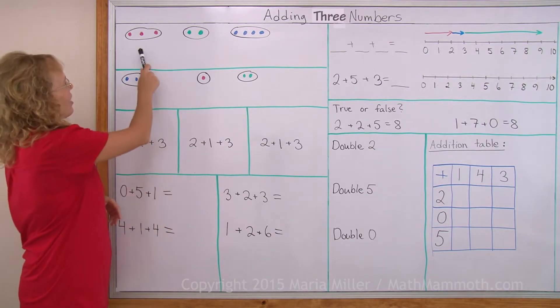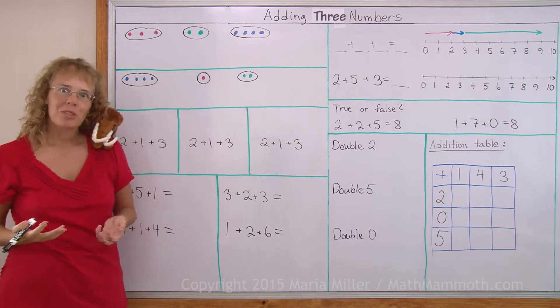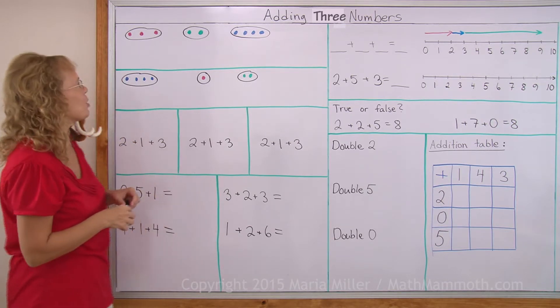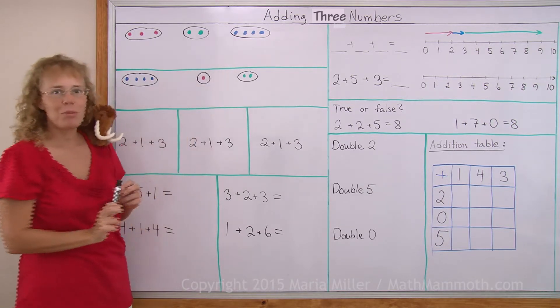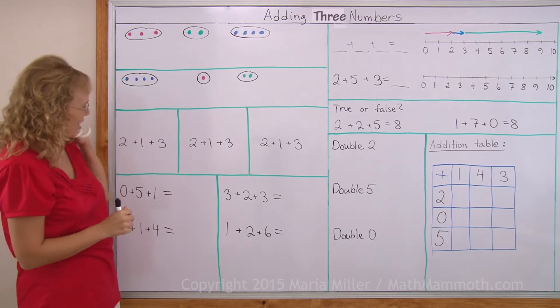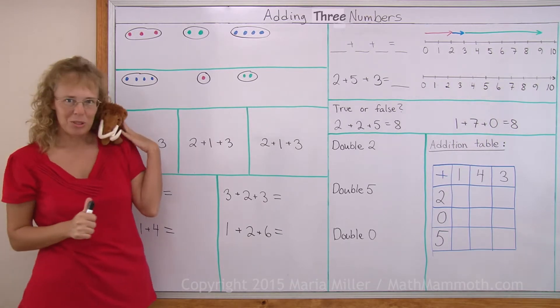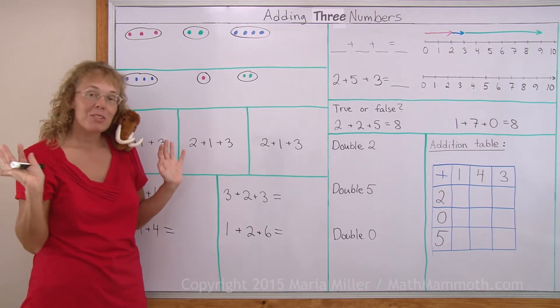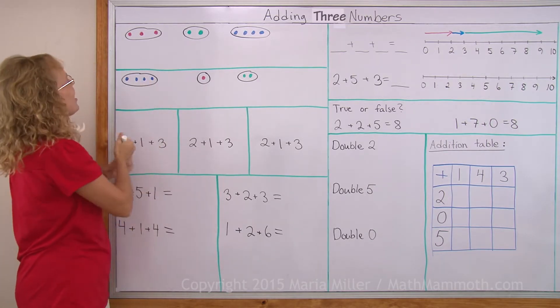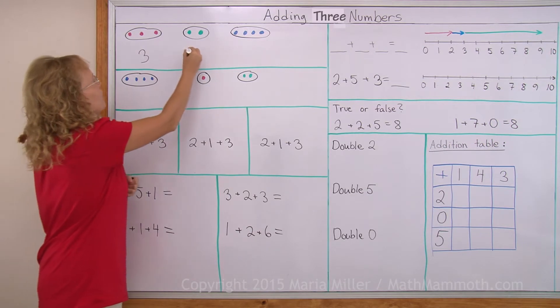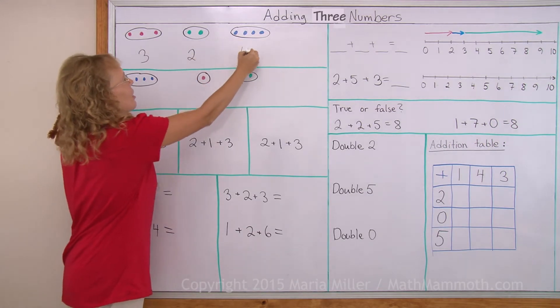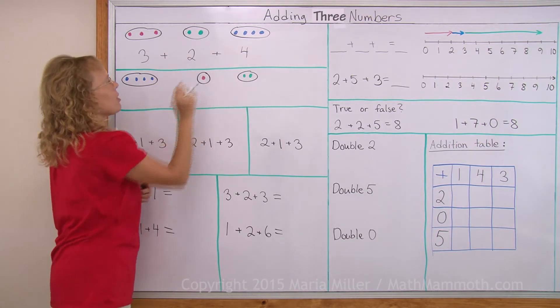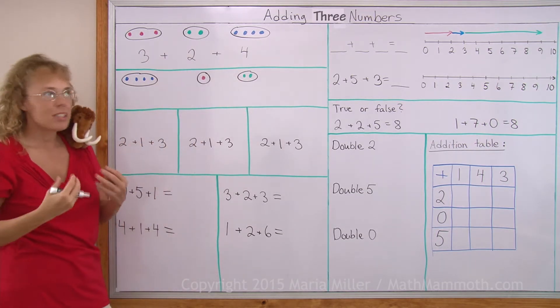Now here I have three different groups of marbles. Oh, he thinks these remind him of blueberries. Of course Matthew, everything reminds you of blueberries because you love blueberries. But whether you think of them as different kinds of berries or marbles, doesn't matter. I have here three, and here I have two, and here I have four. And I'm going to add all of those together. Three plus two plus four. So how many is it together? What is the total?